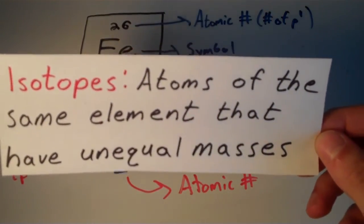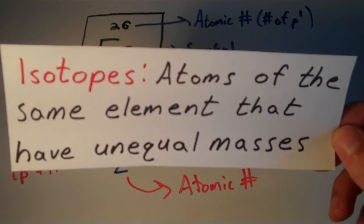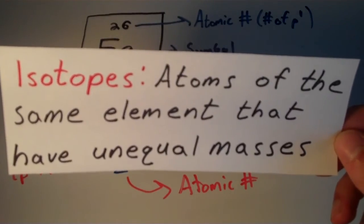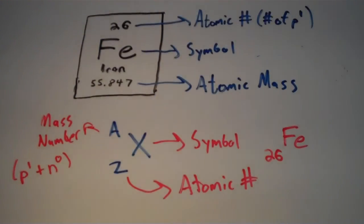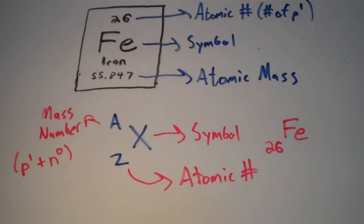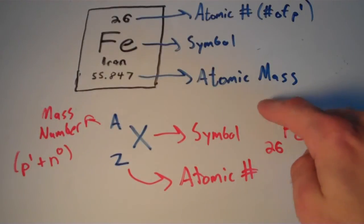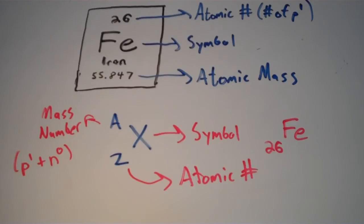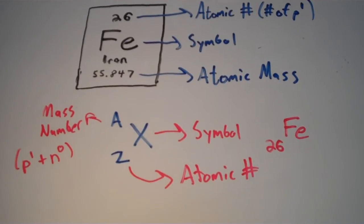And that is where isotopes come into play. So isotopes are just atoms of the same element, so in other words, they have the same number of protons, or the same atomic number, that have unequal masses. So in the case of iron, you have the atomic number 26, that never changes, but your A term, your mass number, can actually change. In other words, iron may have more than one isotope. And it turns out that iron actually has four isotopes.